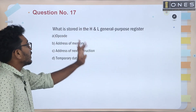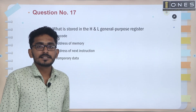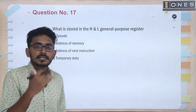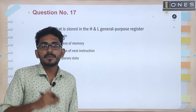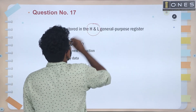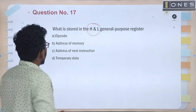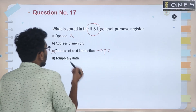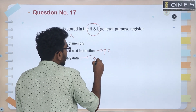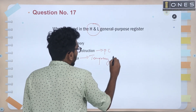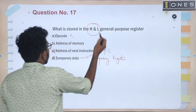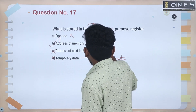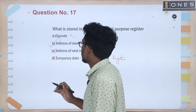Next question: What is stored in the HL general purpose register? The general purpose registers are BC, DE, and HL, each 8 bits in size, which can be combined into register pairs. The HL register stores the address of a memory location.